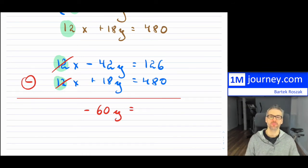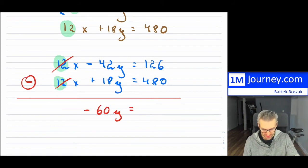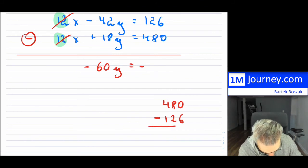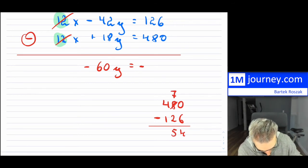And then 126 minus 480, so that's going to be a negative number, right? Let's assume that we don't have calculators so we're going to have to subtract these. So 480, so that's 10, 4 is going to be 7, 7 minus 2 is 5, and then 4 minus 1 is 354.